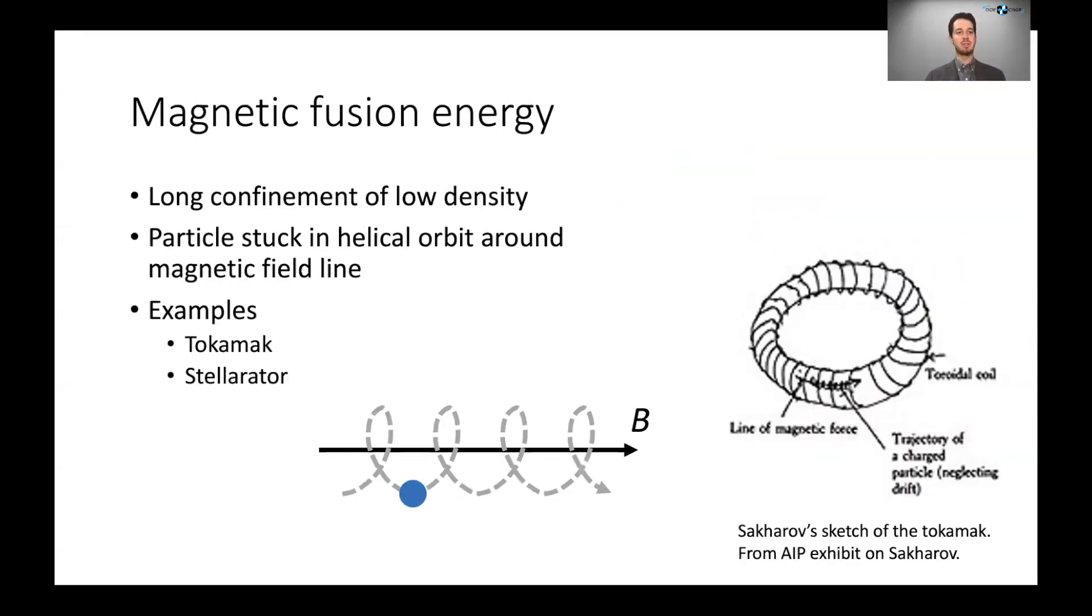Now the other main approach is the magnetic fusion energy approach, which is the confinement for a long time of the plasma at a lower density. And the way this is usually achieved is by the use of magnetic fields because a particle in the presence of a magnetic field, a charged particle will be stuck in a helical orbit around that magnetic field line. So if you wrap those magnetic field lines around on themselves into a sort of circle donut shape, then the particle will be stuck on a helical trajectory which wraps around upon itself, and thus you get a long-term confinement of a plasma.